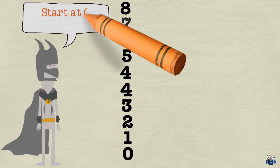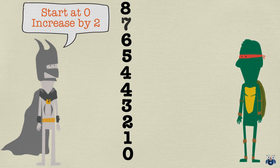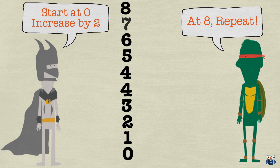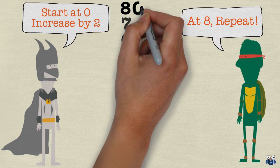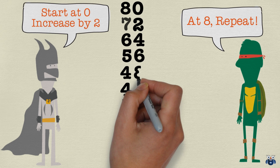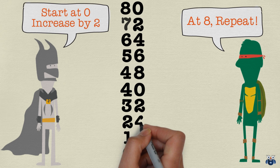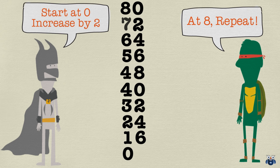Now, our next set of numbers start from 0 and increase by 2. However, once we reach 8, we go back to 0 and start all over again. So let's do this together: 0, 2, 4, 6, 8. And now we start again from 0 — so we have 0, 2, 4, 6, and 8.